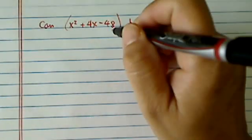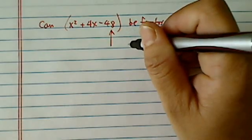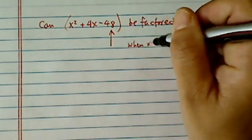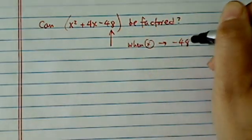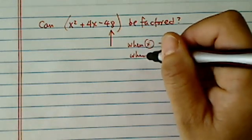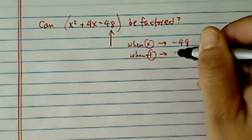So when we factor something, we're looking for a pair of numbers. When you multiply, you should get minus 48, and when you add them together, you should get a positive 4.